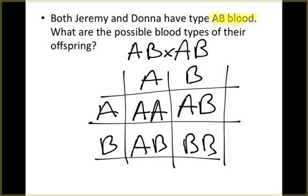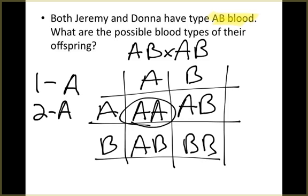Really does not get much easier than this. So we look: what are the possible blood types of their offspring? Well, we have one individual, let's see, we got type A here, so we have one individual who could be A.